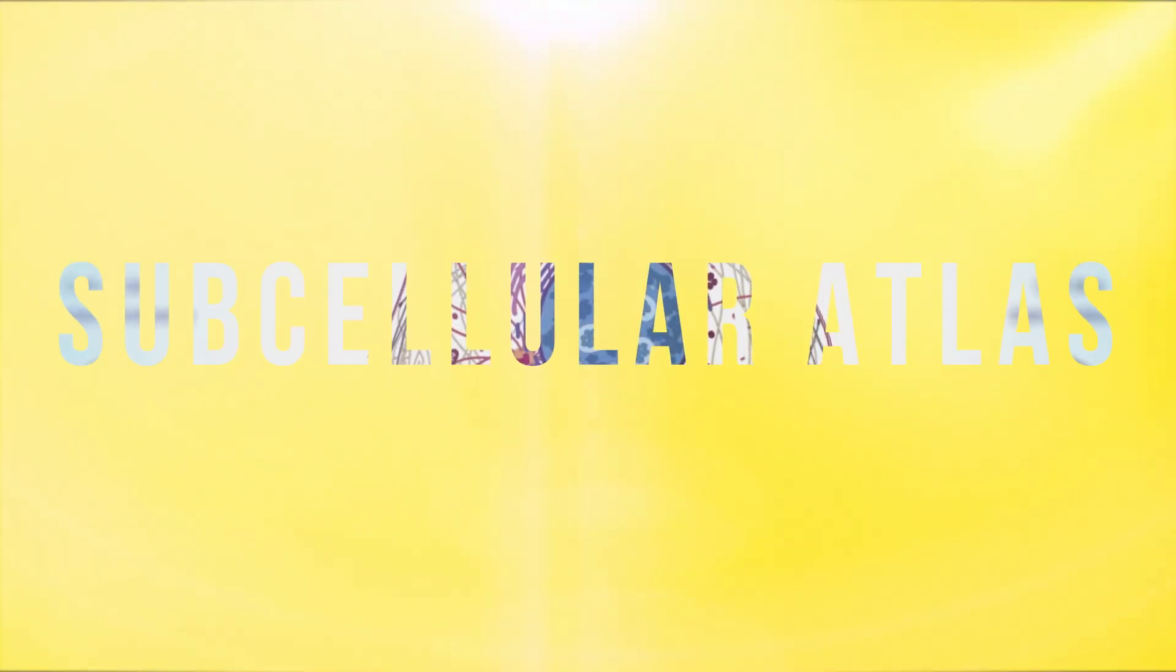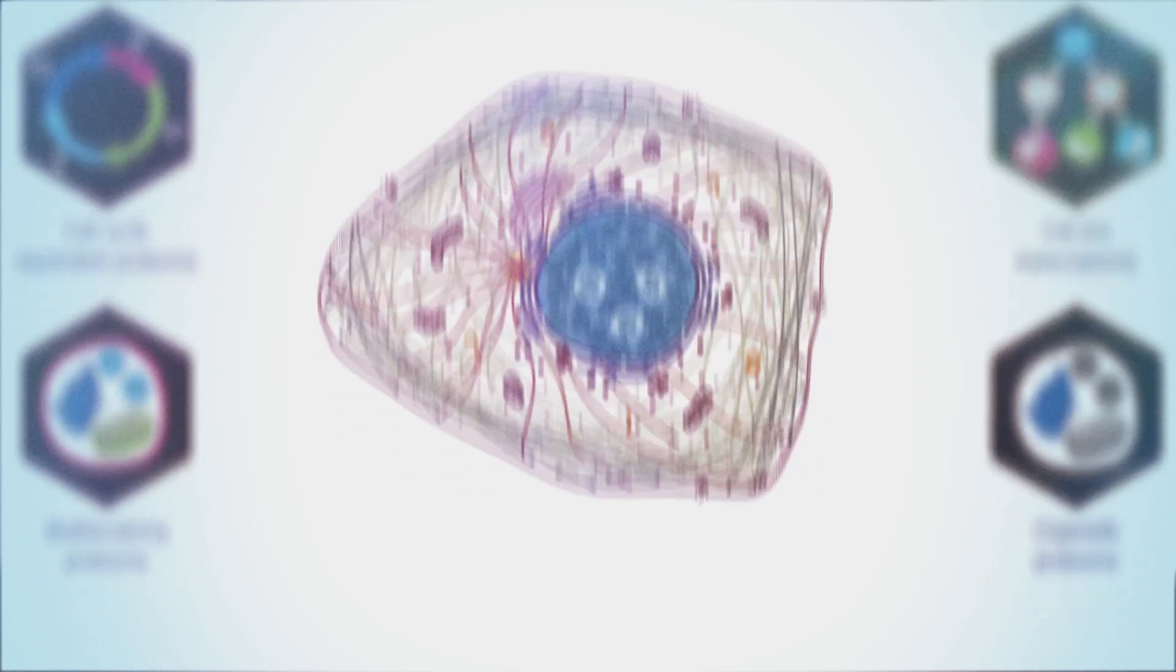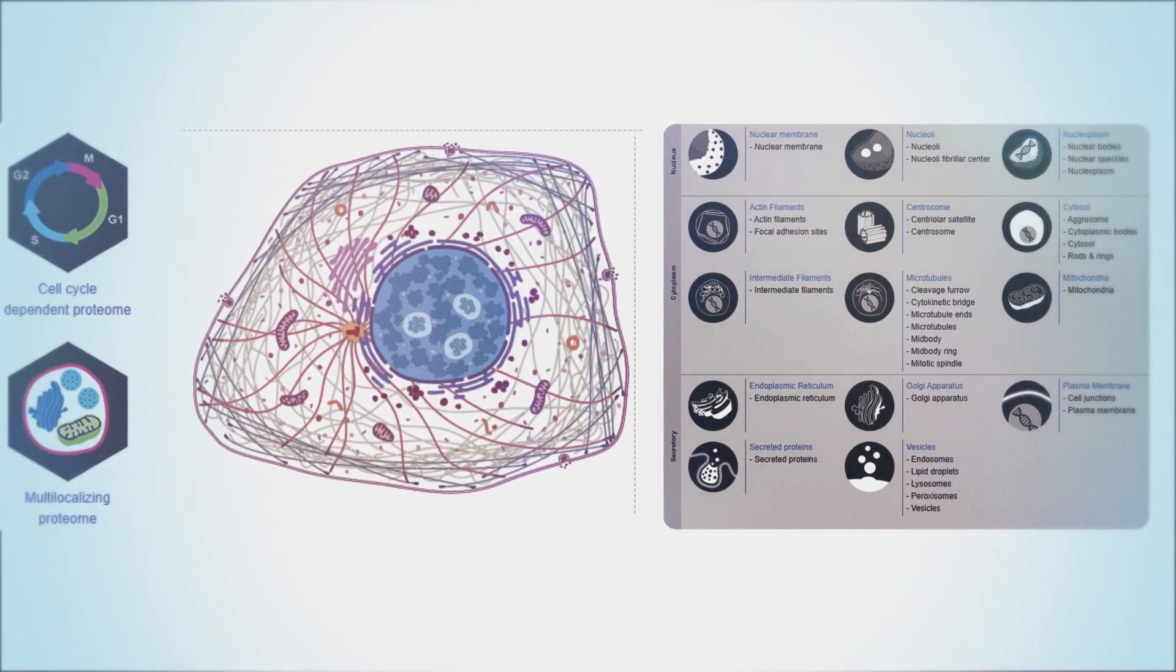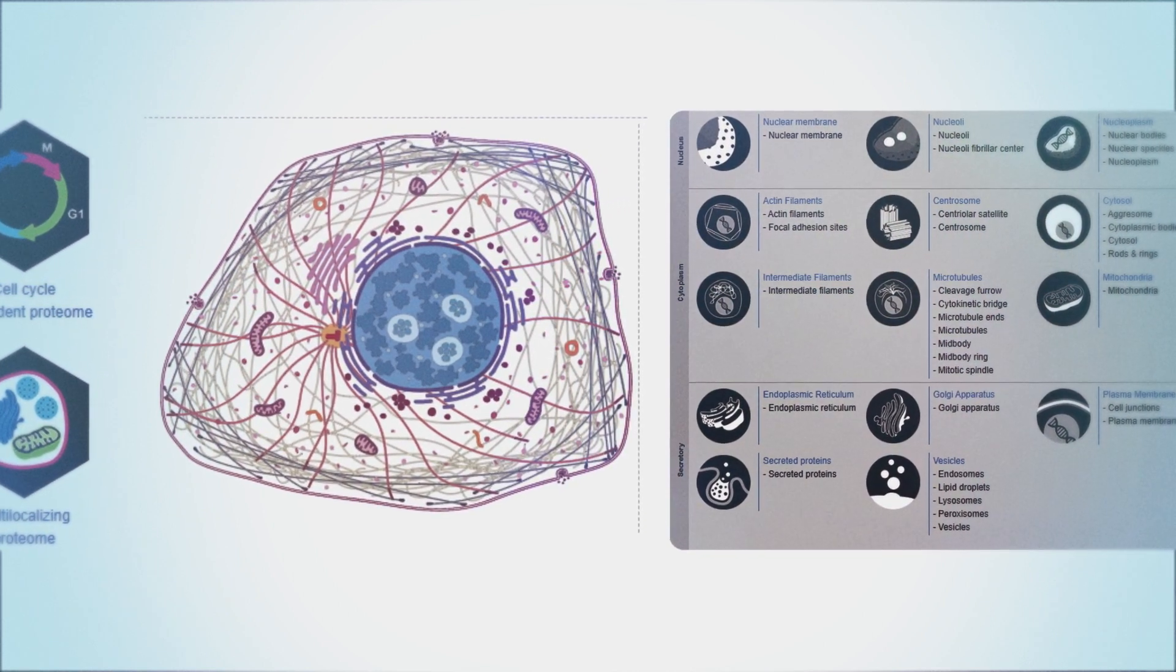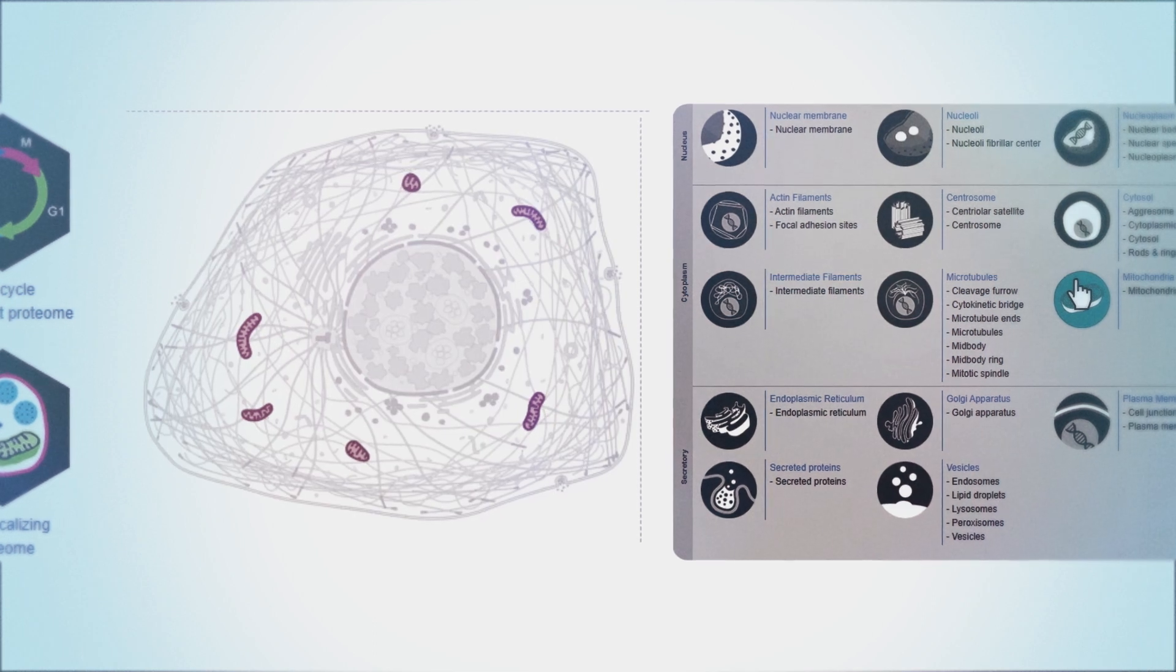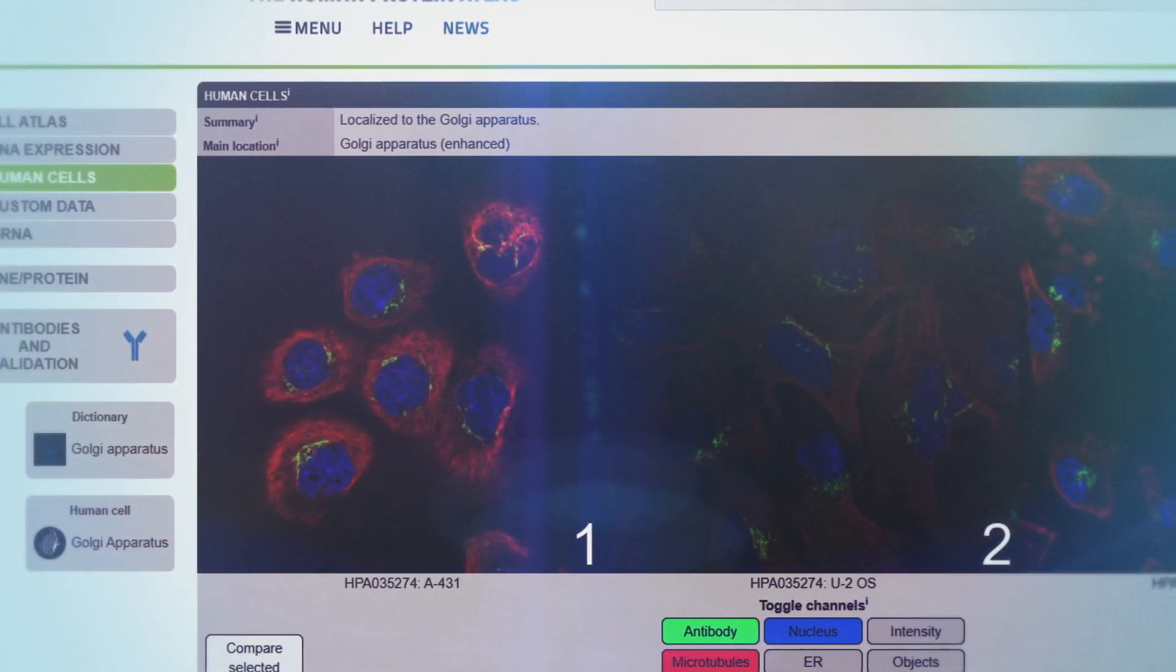The cellular atlas focuses on the smallest unit in the body, the cell. Multiple cellular compartments within the cell are analyzed for the presence of a particular protein, including mitochondria, endoplasmic reticulum, Golgi apparatus, and nucleoli.